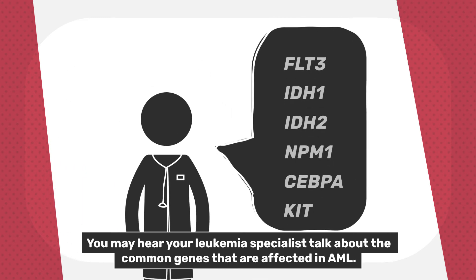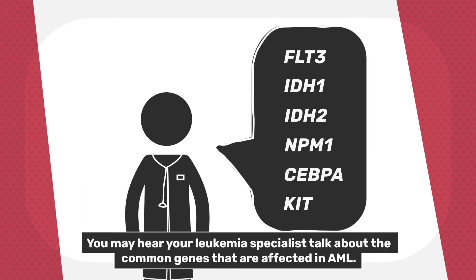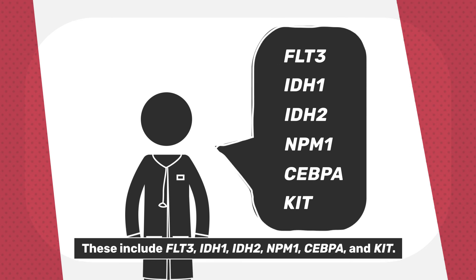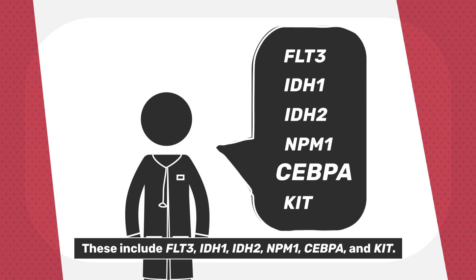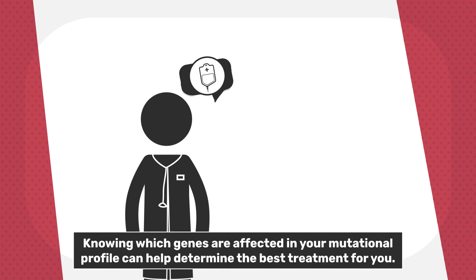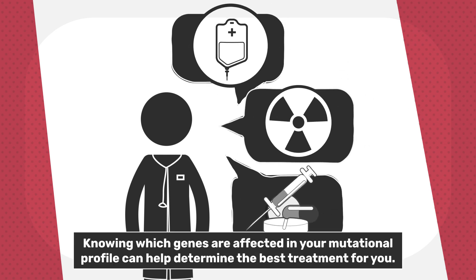You may hear your leukemia specialist talk about the common genes that are affected in AML. These include FLT3, IDH1, IDH2, NPM1, CBP-alpha, and KIT. Knowing which genes are affected in your mutational profile can help determine the best treatment for you.